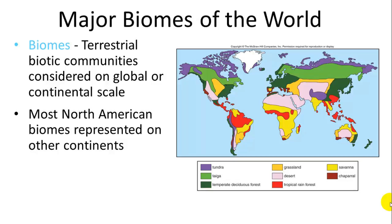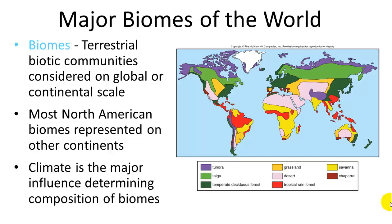Most North American biomes we see on other continents; however, there are some biomes that are not on North America but are on other continents. The major influencing factor in determining the establishment of one biome over another is the climate — the long-term consistent weather patterns — and things that affect climate will affect the establishment and persistence of different biomes.